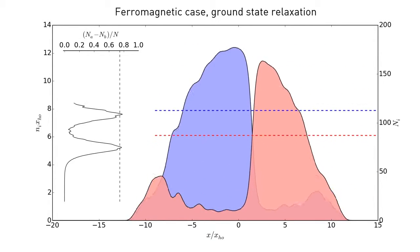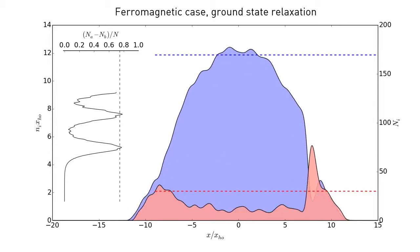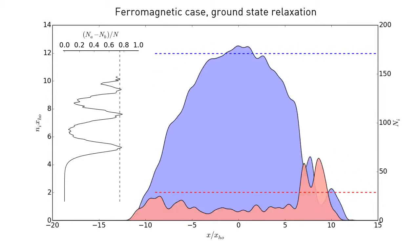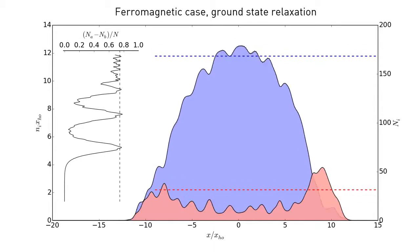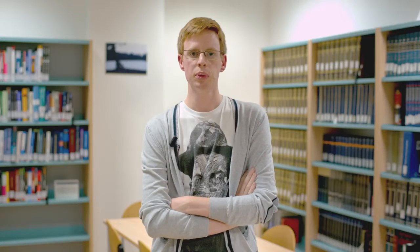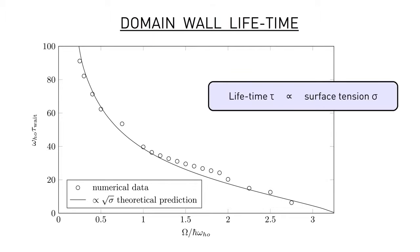As one can expect, the lifetime of the domain wall is larger the deeper the initial configuration is in the ferromagnetic region. The domain wall has a characteristic energy scale given by its surface tension, which goes to zero approaching the phase transition. As a matter of fact, we show that the lifetime of the domain wall is simply proportional to its surface tension.